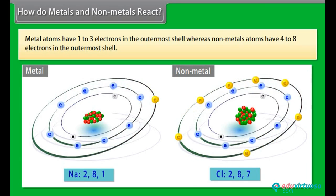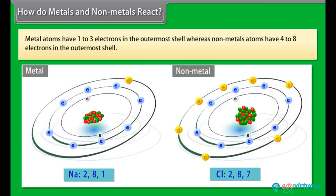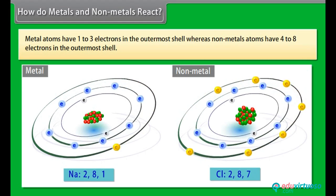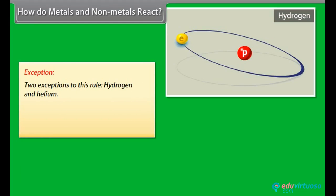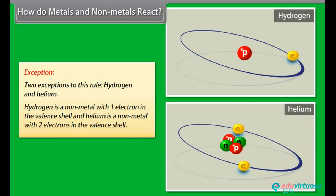How do metals and non-metals react? Metal atoms have 1 to 3 electrons in the outermost shell, whereas non-metal atoms have 4 to 8 electrons in the outermost shell. Exception: Two exceptions to this rule are Hydrogen and Helium. Metals that donate electrons gain positive charge equal to the number of electrons donated and non-metals gain electrons and negative charge equal to the number of electrons accepted.